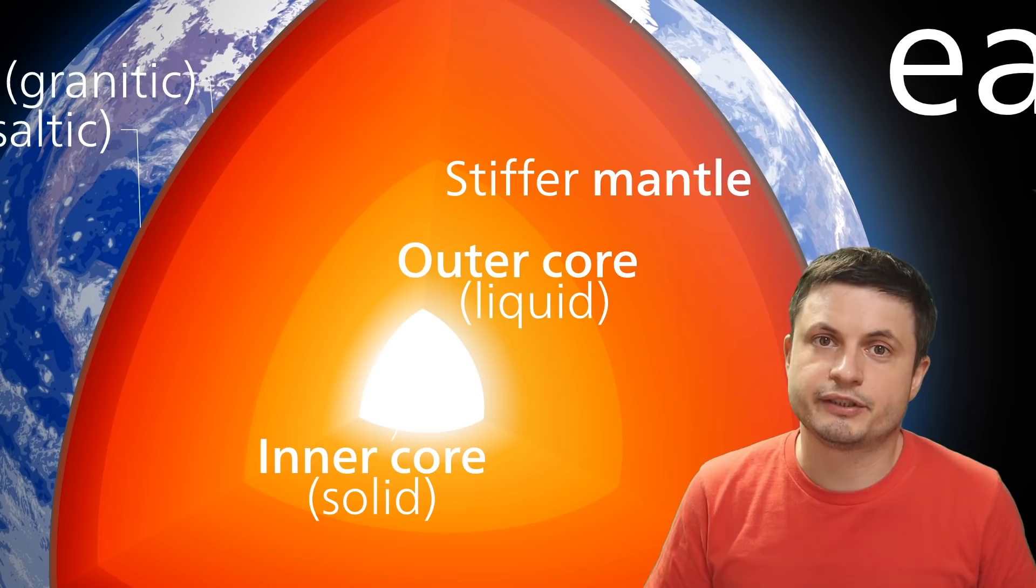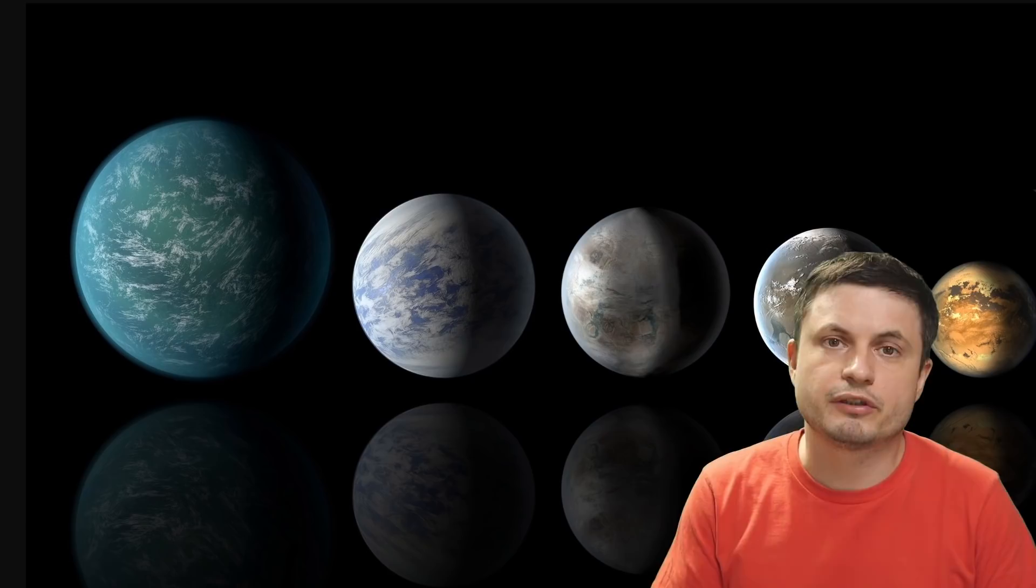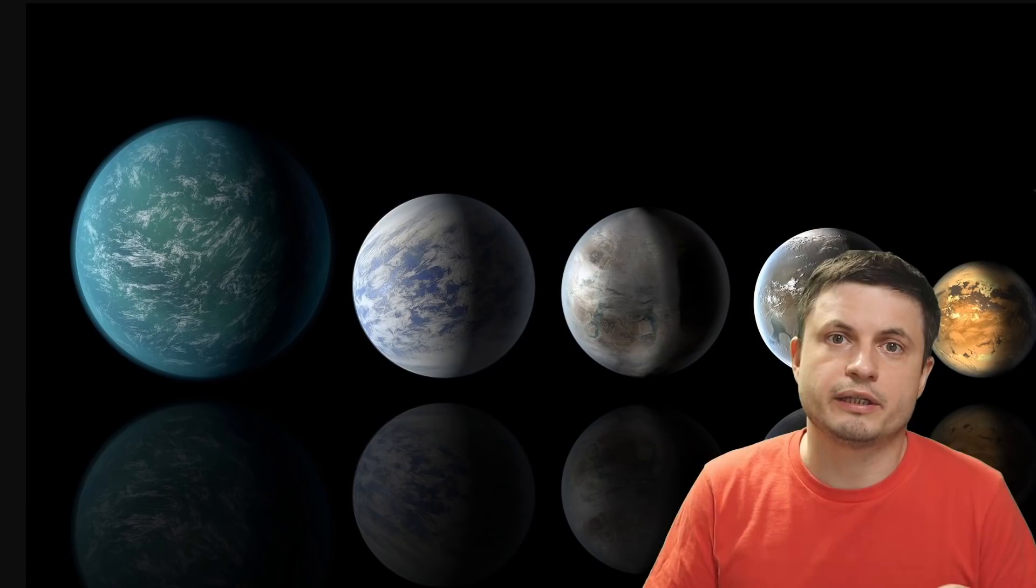It's kind of important for us to understand how much of, for example, uranium and thorium should be present inside the planet for the planet to become habitable like planet Earth. We expect different planets to have different composition on the inside, and we also expect planets to have completely different temperature and internal structure based on what the original planetary system contained.